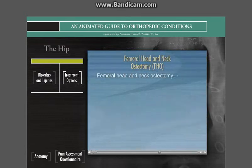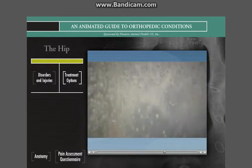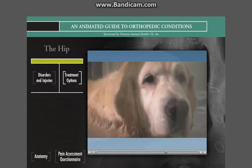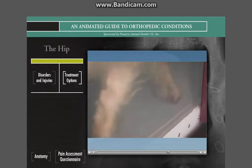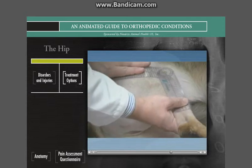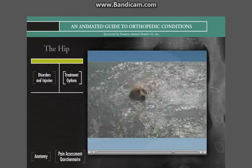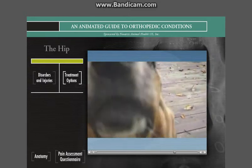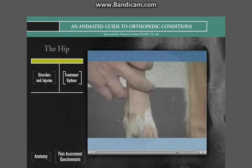Femoral head and neck ostectomy, or FHO, provides a salvage surgical option for treating dogs with Legg-Perthes disease, end-stage osteoarthritis, or severe trauma to the hip joint. Postoperative physical therapy is essential to a good outcome in this procedure, including passive range of motion exercises, walking, swimming, and exercises on an underwater treadmill to increase muscle mass and improve the hip's range of motion. Dogs with good to excellent muscle mass recover well from this procedure with a 70 to 80% return of limb function. Dogs with poor muscle mass may have a good surgical outcome, but they will require an increased duration of postoperative physical therapy.